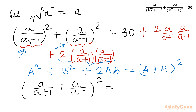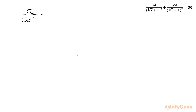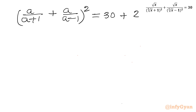That means the LHS is: a/(a+1) plus a/(a−1), whole square. The right hand side is 30 plus 2a² in the numerator. The denominator uses the difference of two squares: (a+1)(a−1) = a²−1. Taking LCM on the left side gives: a(a−1) + a(a+1) all over (a+1)(a−1), whole square. Expanding, the +1 and −1 cancel, giving 2a² over (a²−1), whole square equals 30 plus 2a²/(a²−1).